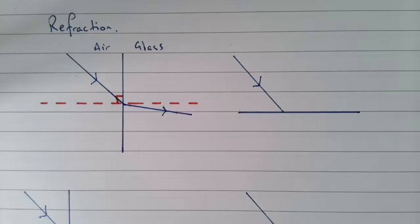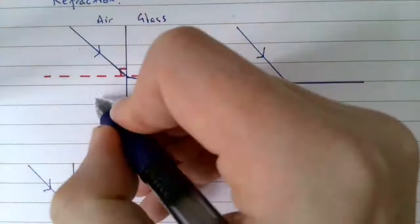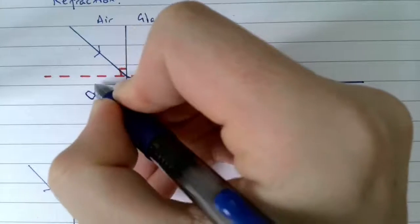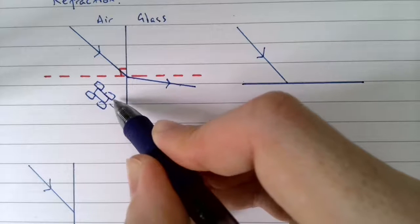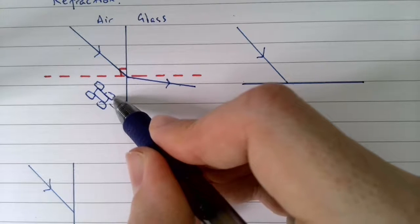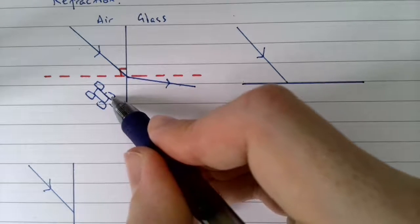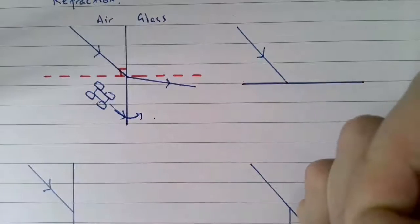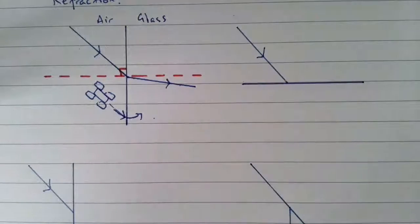You don't need to understand why this happens — you can just memorize the two rules. But one helpful model: imagine a car with wheels approaching the boundary. The wheel that crosses first starts to slow down before the other one does. Because one wheel is going slower, it causes the car to change direction — which is analogous to how refraction works.